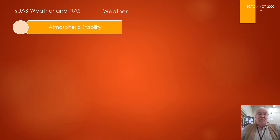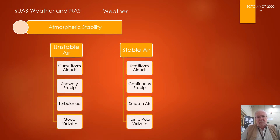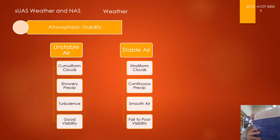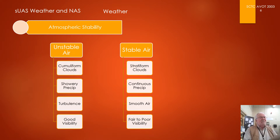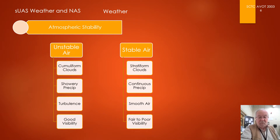Episode 6, atmospheric stability — we have unstable air and stable air. Before we start, let me read a bit from the Aviation Weather advisory circular, AC 00-6B, which is the current one. It's freely available on the FAA website as a PDF, or you can buy the book. This is from chapter 12.